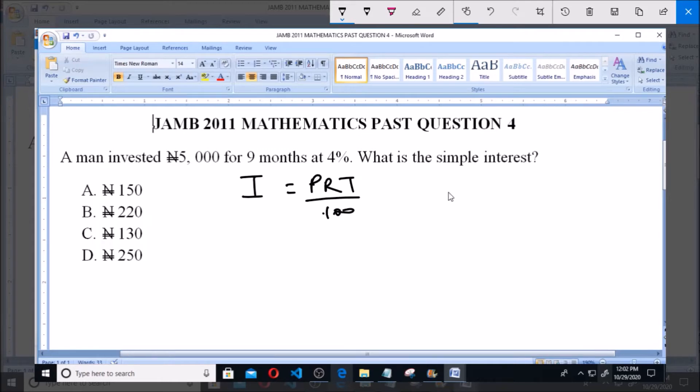We are given that the principal amount equals 5,000 naira. The rate equals 4%. Now the time is usually given per annum in years, but we are given in months.